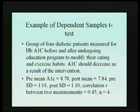I work with endocrinology, so here's an example I have from them. We've got a group of four diabetic patients who are measured for hemoglobin A1c, which is usually a marker for nephritic health or kidney function. And so they're measured before and after undergoing an education program to help modify their eating habits and encourage them to exercise. And what you hope is the A1c value will go down as a result of the intervention. So the pre-mean A1c is 8.78, the post is 7.84. The standard deviations are 1.01 and 1.10. The correlation in this case is 0.45 and the n is 4.